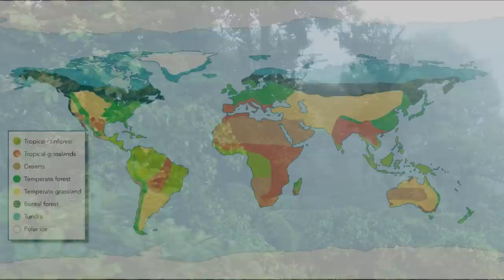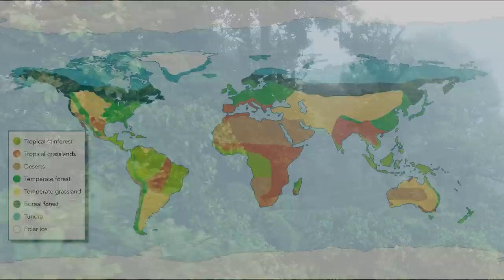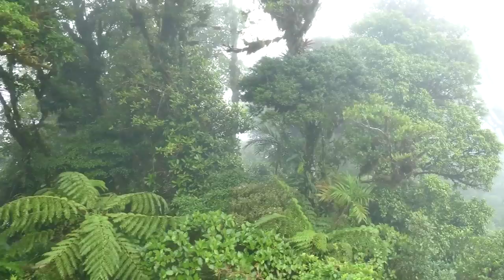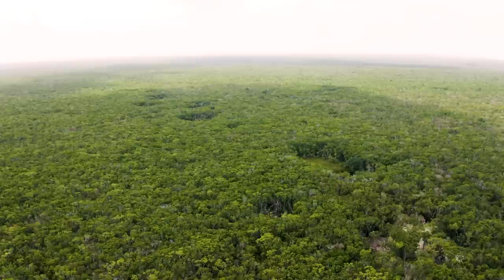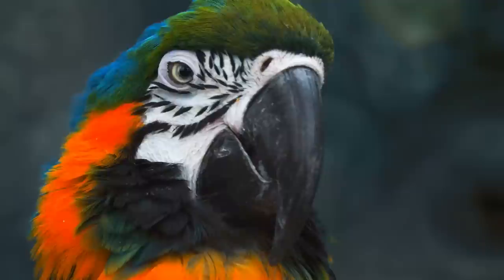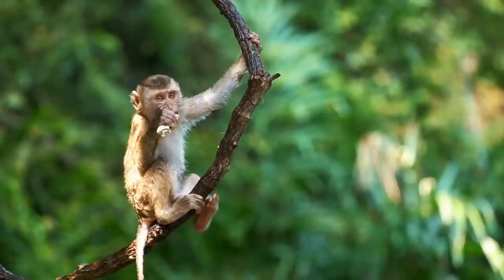Tropical rainforests are found close to the equator. They are warm and humid and have high precipitation all year round. Tropical rainforests have dense vegetation with lots of trees, and in terms of animals, they are the most ecologically diverse land ecosystems on Earth.